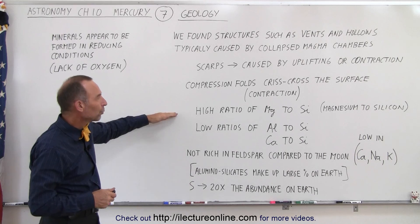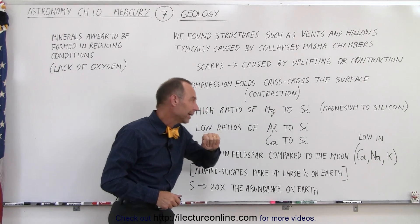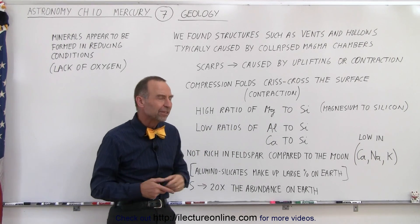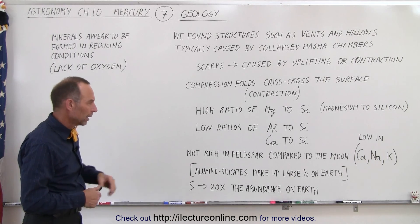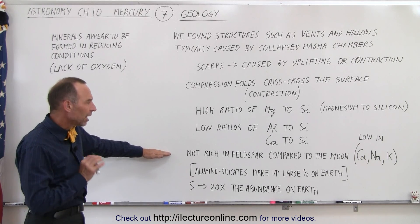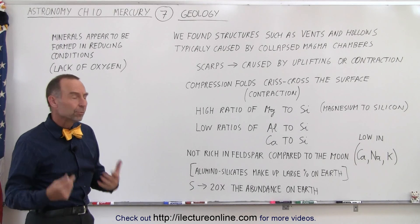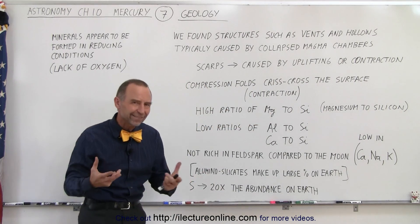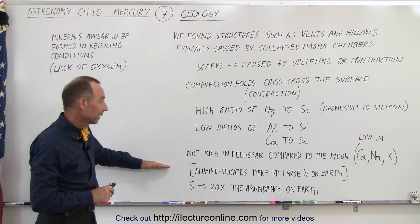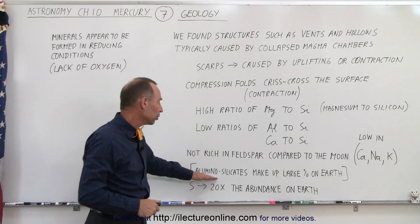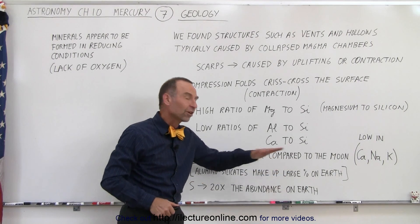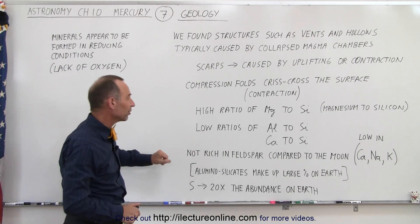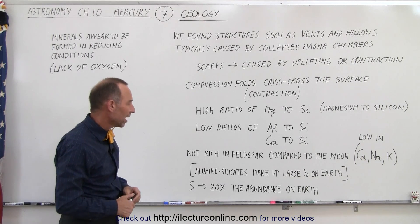We do find high ratios of magnesium to silicon and low ratios of aluminum to silicon and calcium to silicon — that's different from what we see on the Moon and on the Earth. We see not a lot of feldspar compared to what we see on the Moon, and feldspar contains calcium, sodium, and potassium, so those are present in lower quantities on Mercury. Keep in mind that aluminum silicates make up a large percentage on Earth, so we see a disparity in the amount of feldspar on Earth versus Mercury.